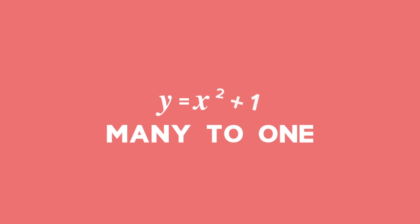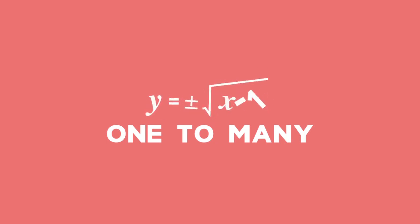An example of a many-to-one mapping is Y equals X squared plus 1. There are two X values — many — related to one Y value. An example of a one-to-many mapping is Y equals plus or minus the square root of X minus 1.